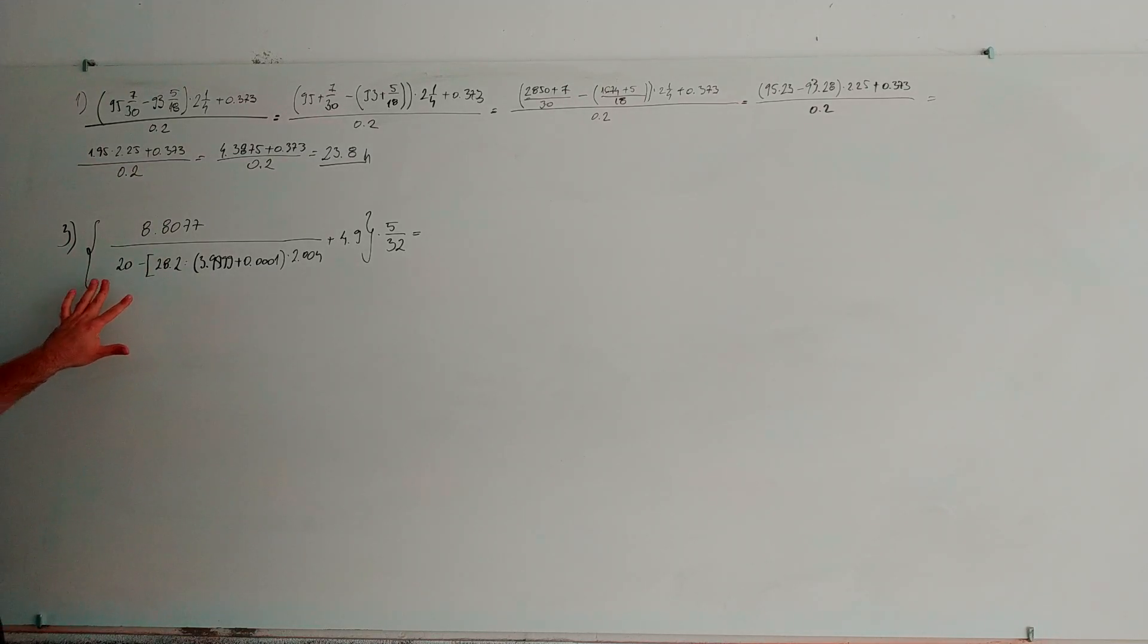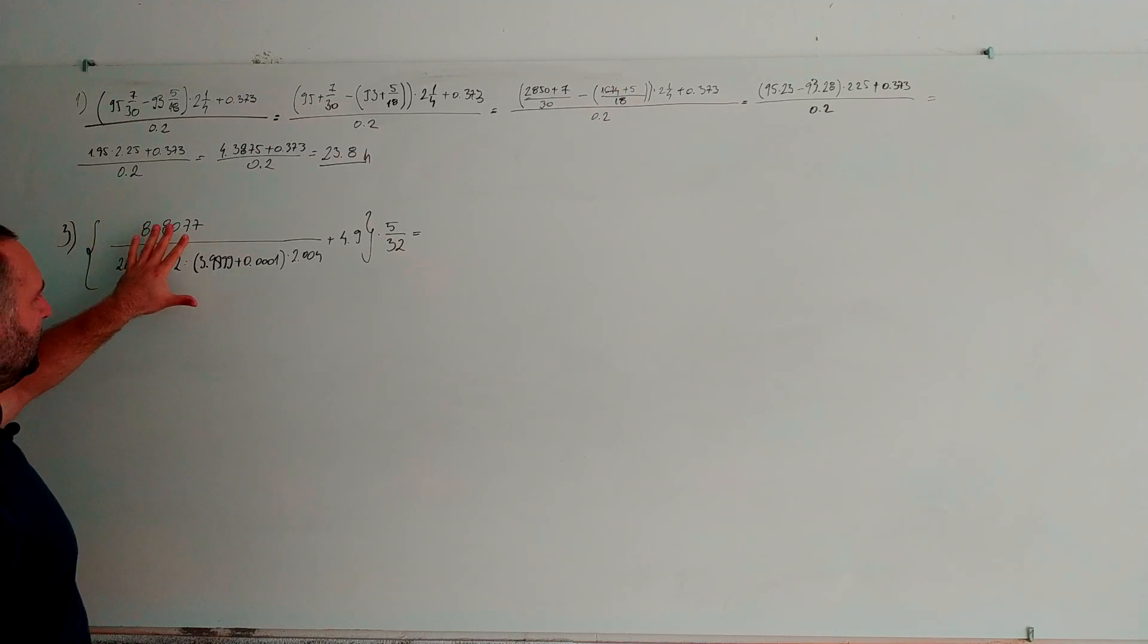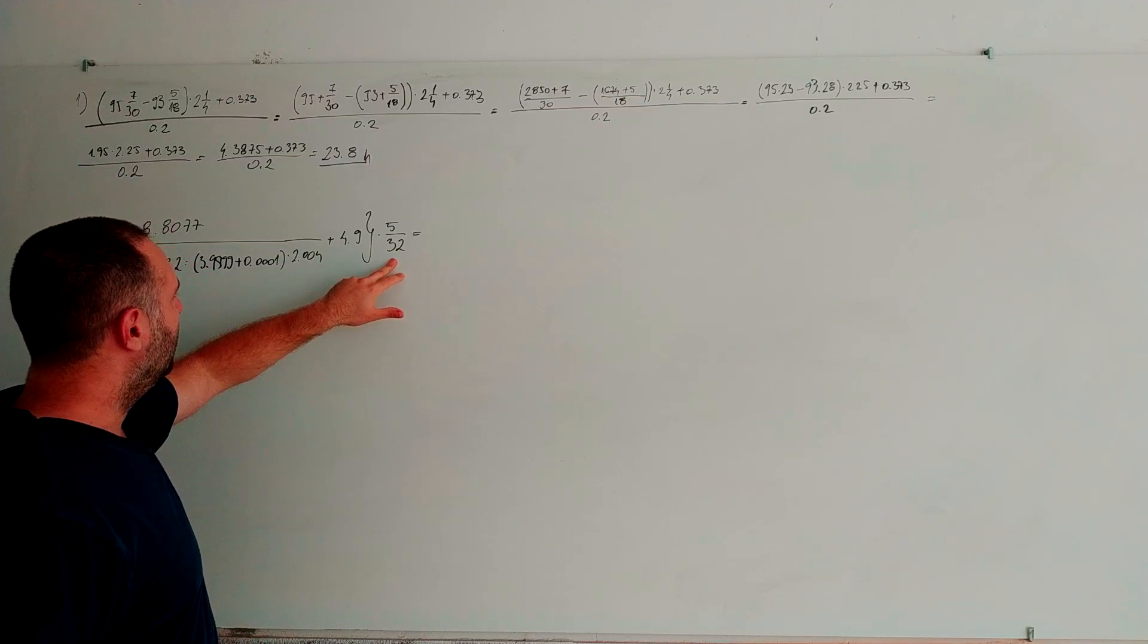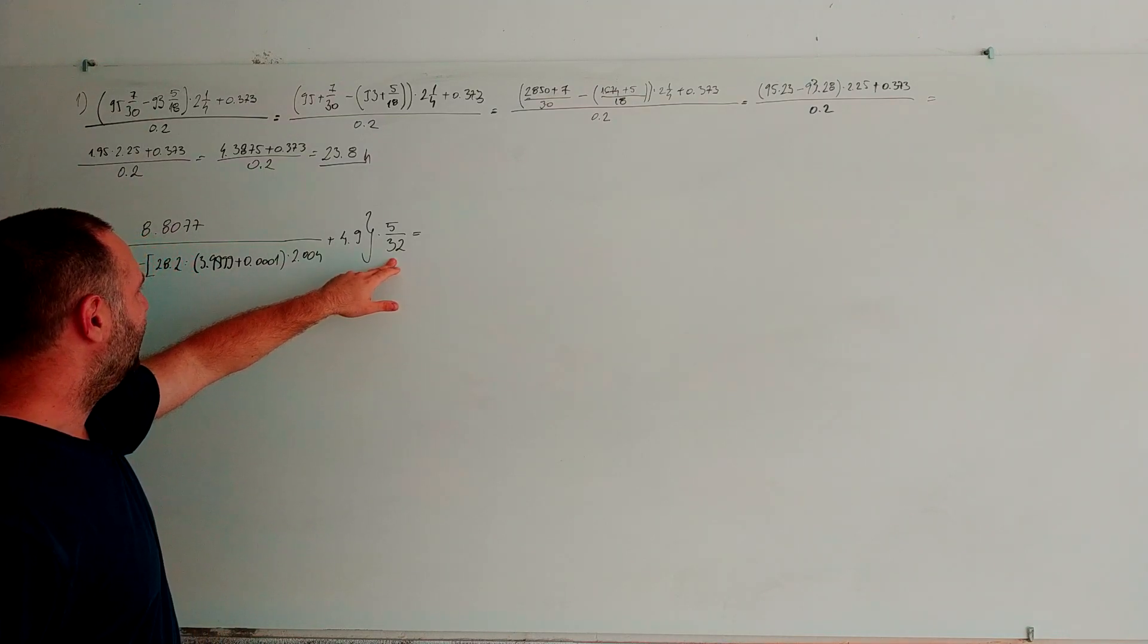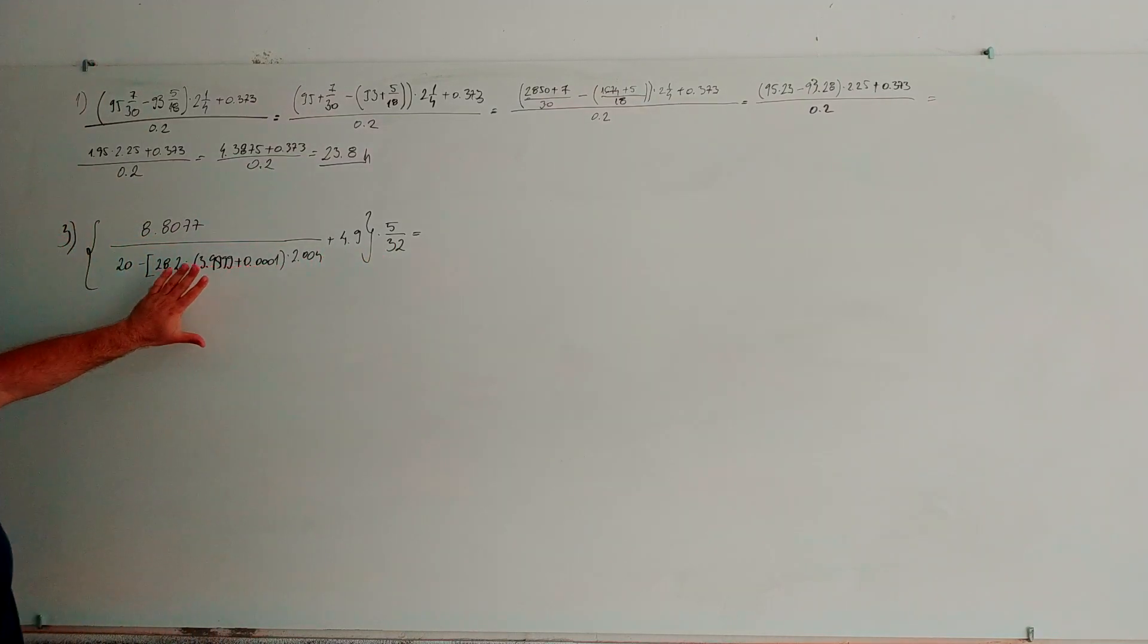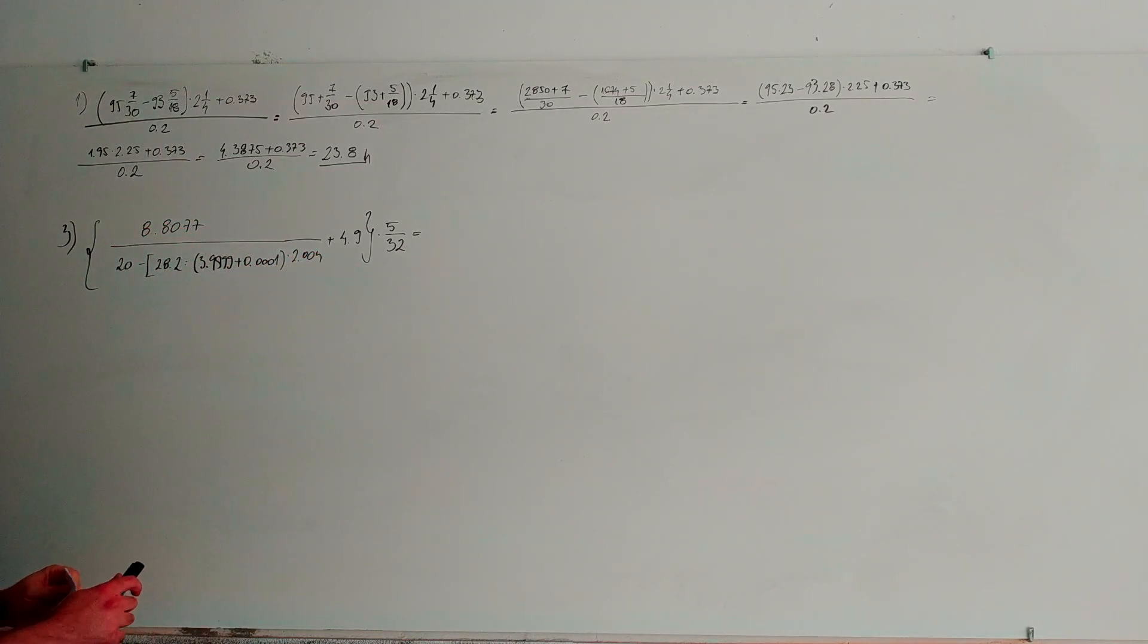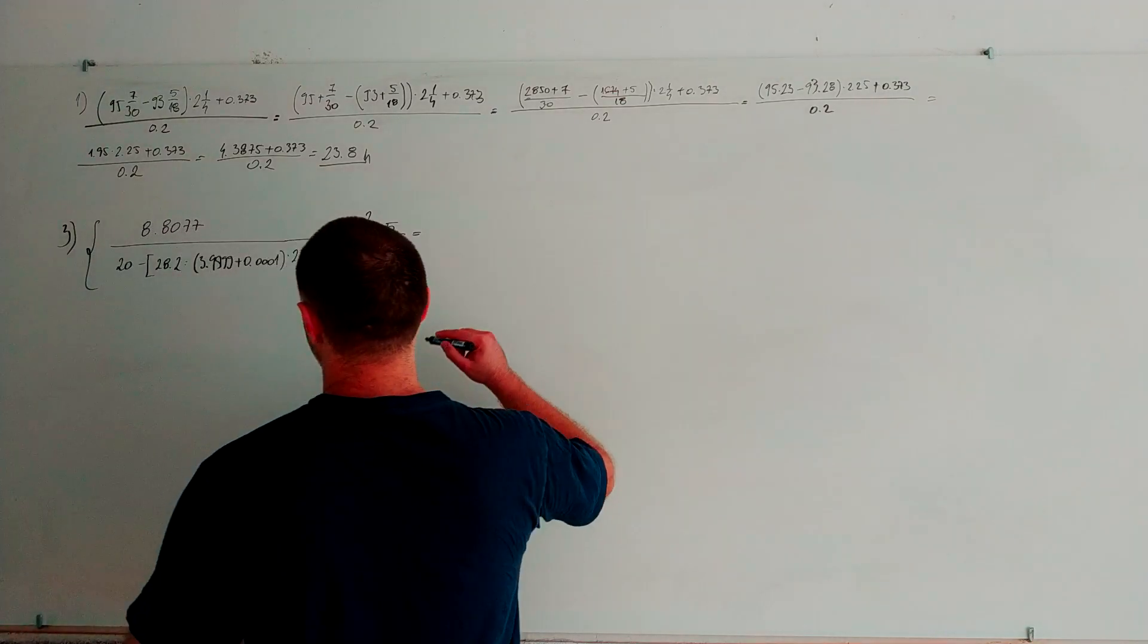What we have here is a big fraction with decimal numbers and one classical example of a fraction. We are going to simplify the lower part, then divide upper and lower part and so on. Let's do the math.